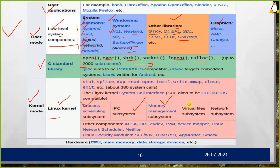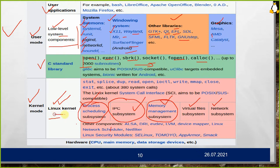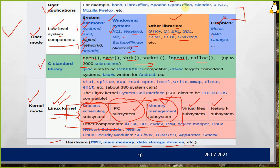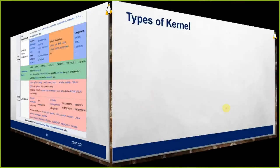In kernel space we have process scheduling, IPC subsystem, memory management, virtual file systems, and network subsystems. We will be learning in depth about IPC, inter-process communication, memory management, and process scheduling — how they are created — in detail during our training. Our training is all about kernel programming and application programming with respect to Linux. Then we have the hardware: CPU, main memory, data storage devices. Our training scope does not include developing LibreOffice or Blender, but we will cover how Linux works, including SELinux, security-enhanced Linux, testing, and profiling.